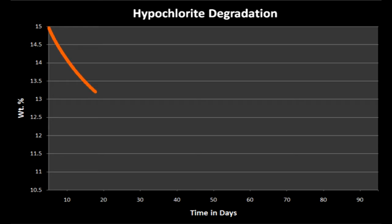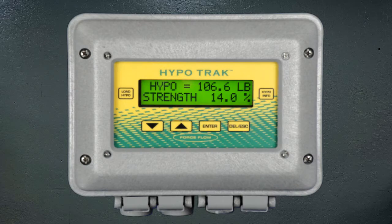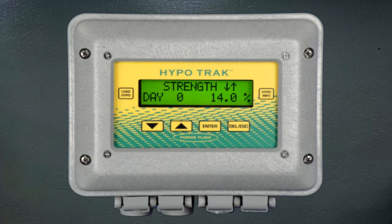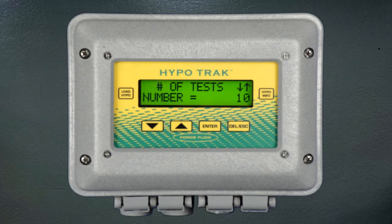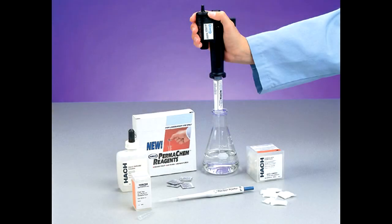As many of you are aware, Hypo is very unstable and continually degrades over time. The first unique benefit I'd like to talk about is the HypoTrack's ability to estimate the strength of your Hypo at any point in time. This is accomplished by simply entering a beginning strength and building a customer-specific degradation curve stored in the HypoTrack memory. You can store up to three different degradation curves depending on your seasonal temperature conditions. Degradation curves can have up to 10 points over an unlimited time period and are derived by using a titration kit to analyze your Hypo strength as it ages.